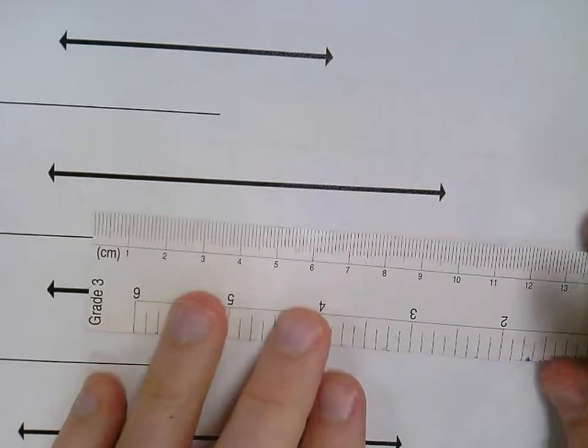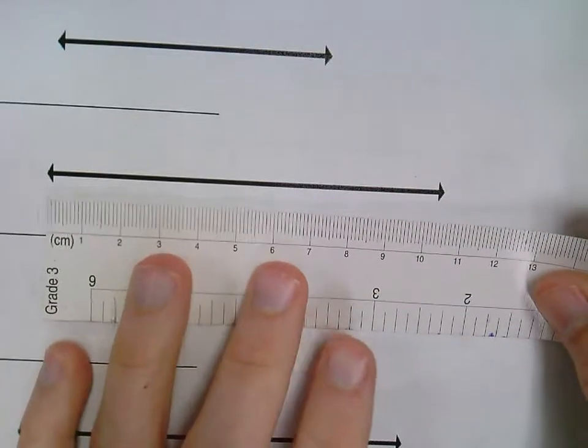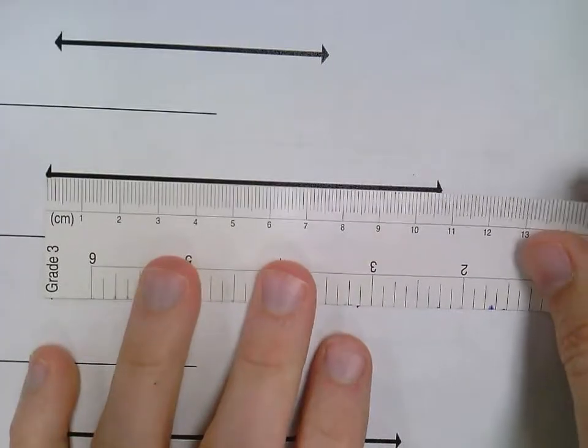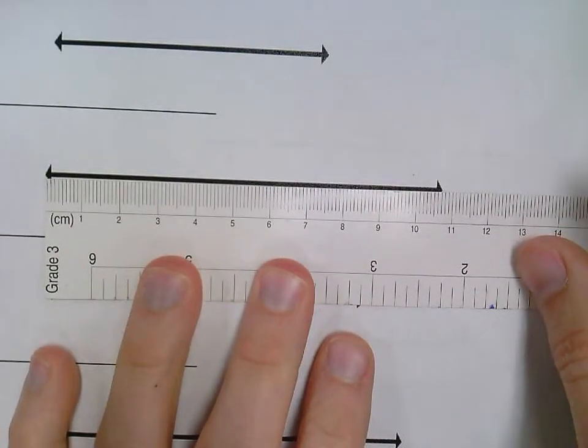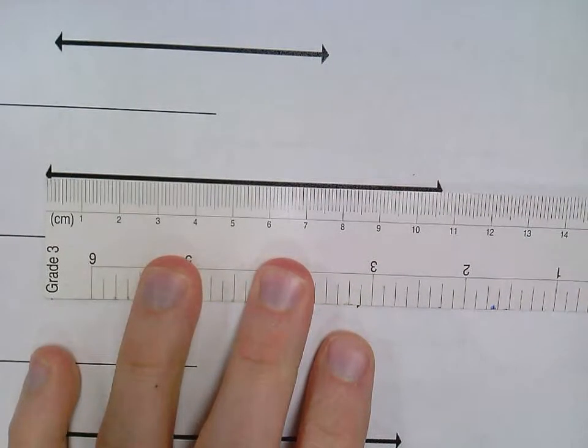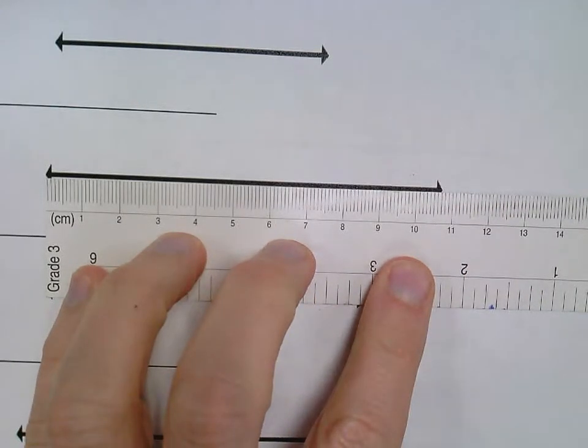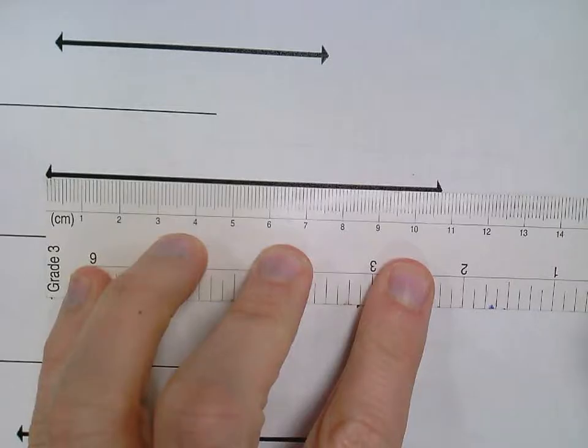Now the other thing when you're measuring to the nearest centimeter, your same rules are going to apply. You line up the zero line on your ruler and that's your first step. Your next step is you're going to build a road just like when you were measuring to the nearest inch.